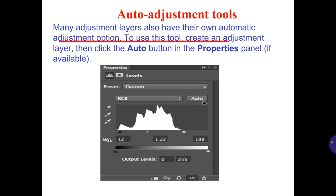Many adjustment layers also have their own automatic adjustment option. To use this tool, create an adjustment layer, then click the Auto button in the Properties panel if available.